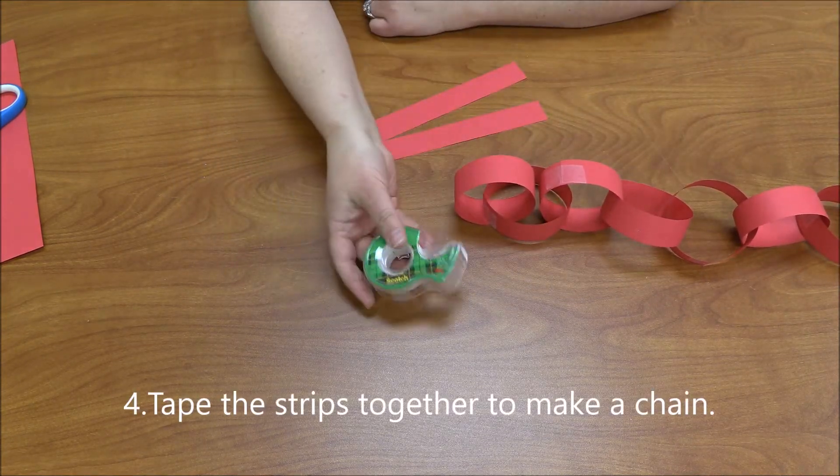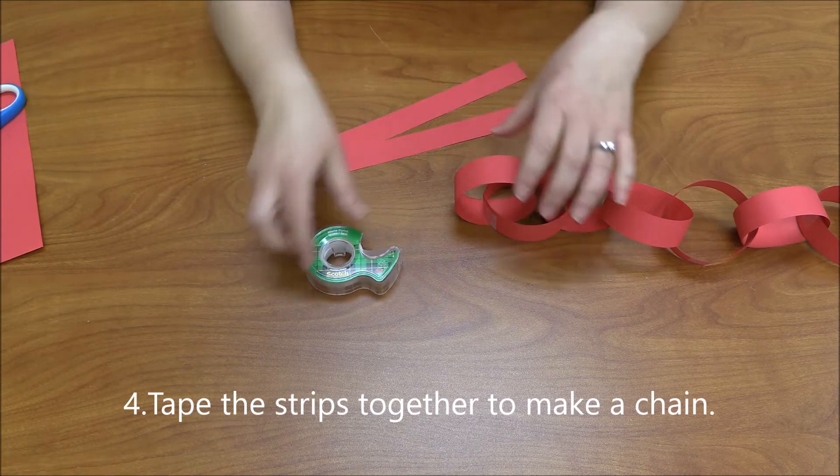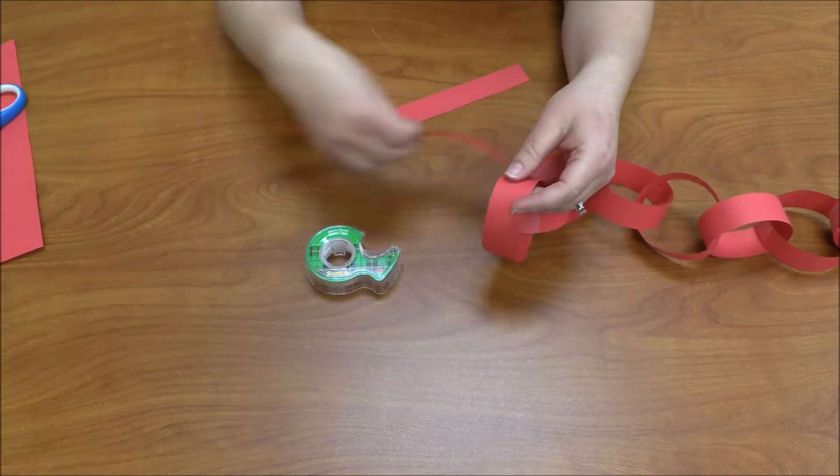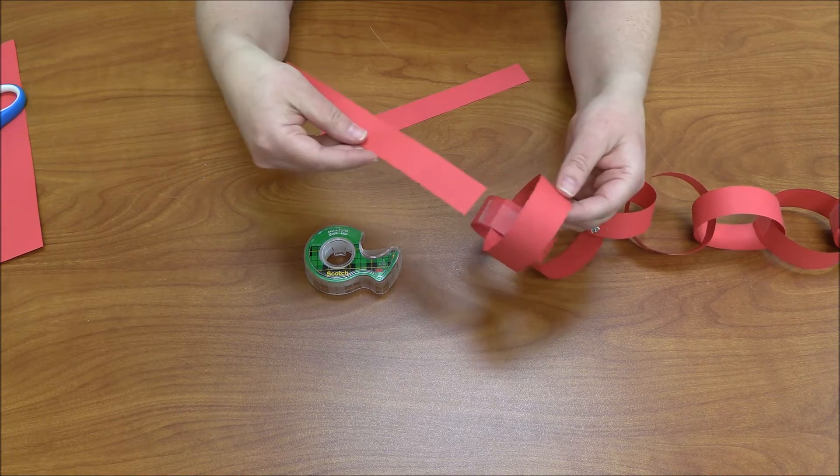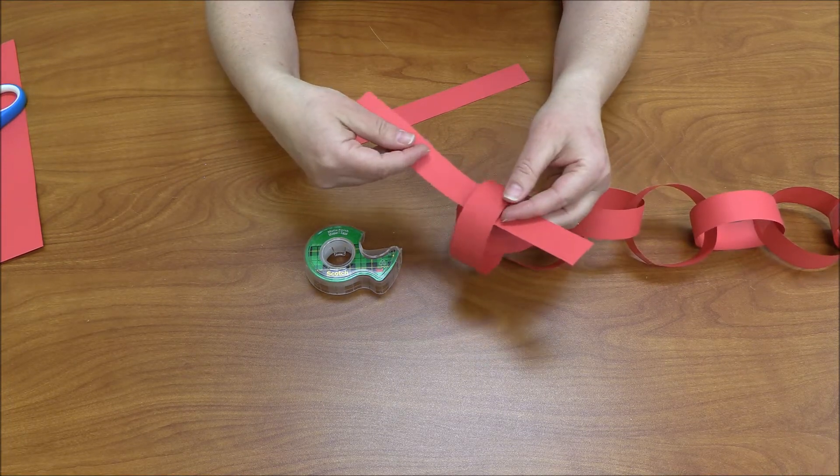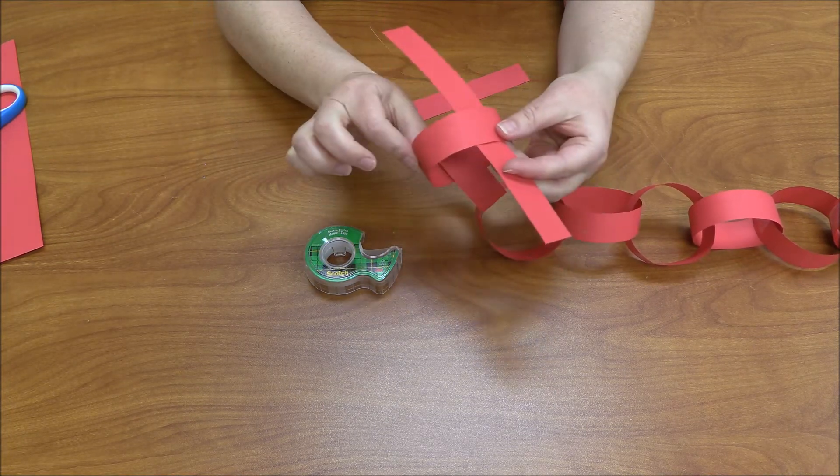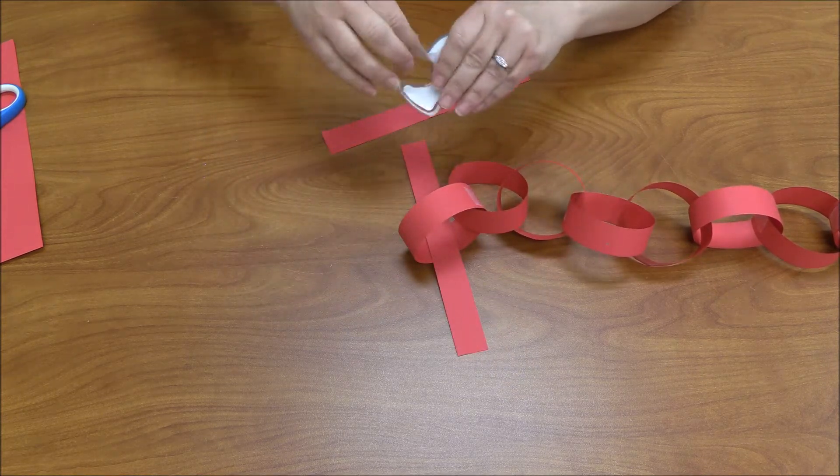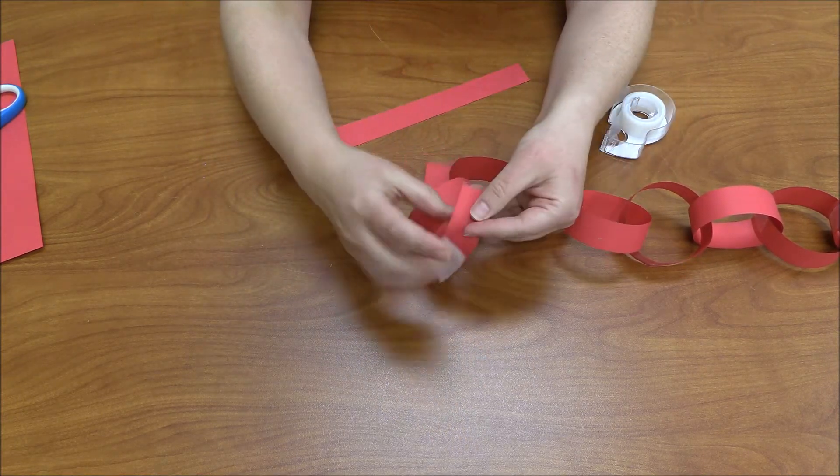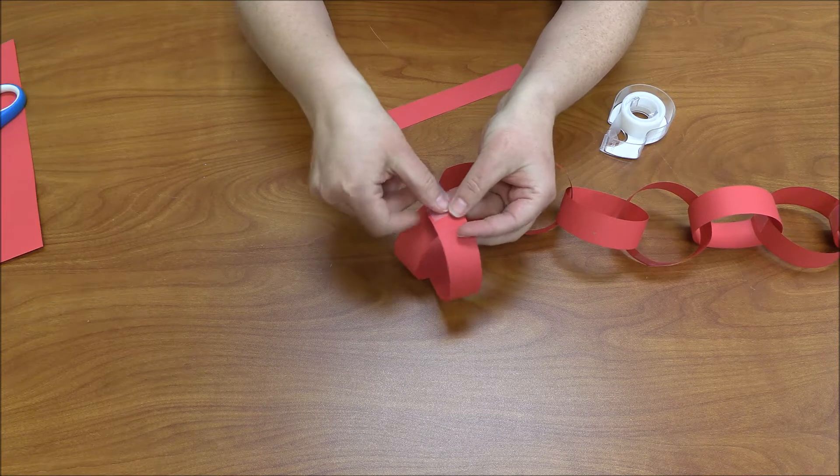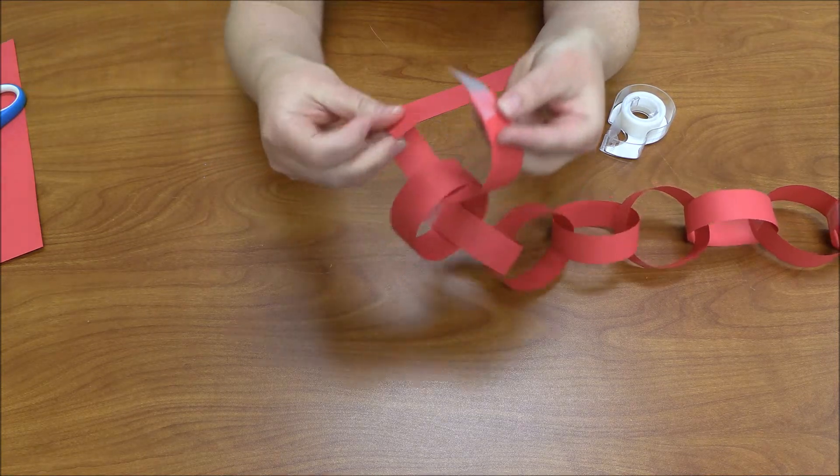You're going to put the strip of paper through one of the chains, and I find it easiest when I tape one side, then bring the other piece up, match it up, and tape it like that. So let me tape one more.